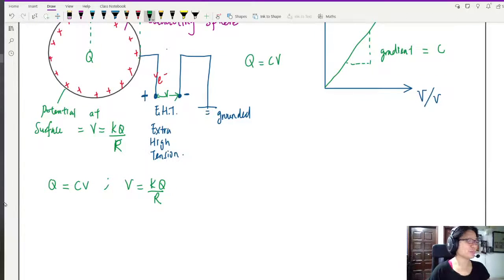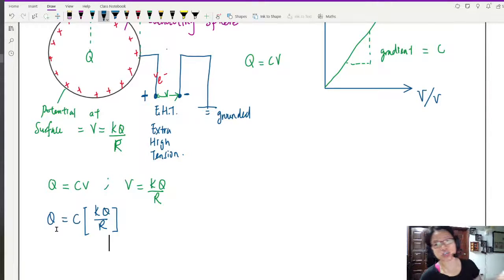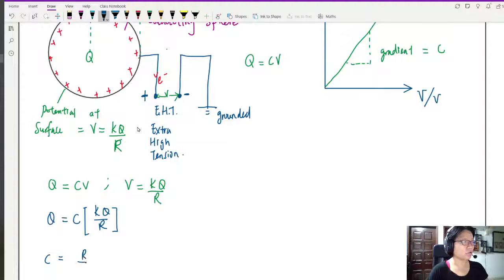From here, I will substitute, and I will have Q is equal to C times KQ over R. So these two Q's are essentially the same thing. The Q on the left is the charge stored on the sphere. The Q on the right is the charge stored on the sphere that causes the potential at the surface. So they will cancel out, and at the end of the day, you will get C is equal to R over K.